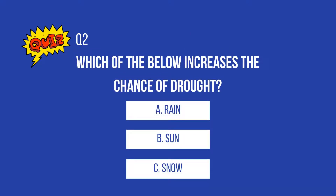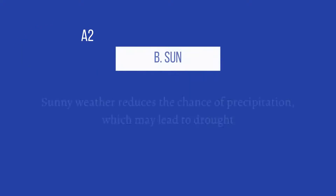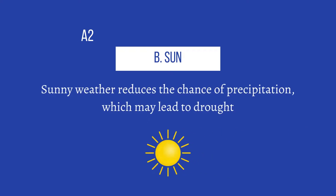Question 2: Which of the below increases the chance of drought? A. Rain. B. Sun. The answer is B, sun. Sunny weather reduces the chance of precipitation, which may lead to drought. See you in the next video.